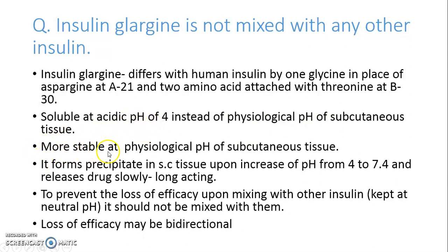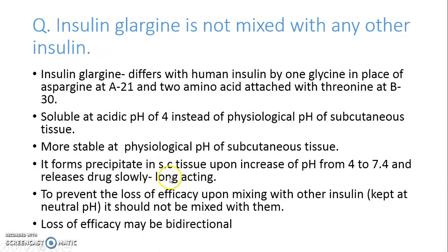Insulin glargine is less stable at the physiological pH of subcutaneous tissue. When there is a change of pH from 4 to 7.4 (the subcutaneous pH), there will be precipitation of insulin glargine, and because of this the release of the drug is slow — that is why it is a longer-acting drug. When insulin is given into subcutaneous tissue, the pH changes from 4 to 7.4, precipitation occurs, release of drug is slow, and that is why it is long-acting.